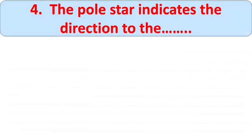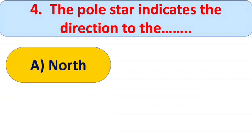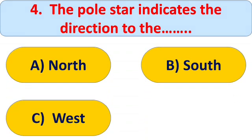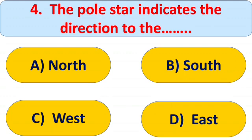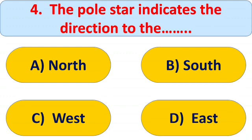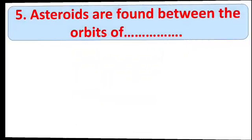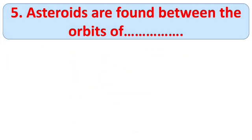Question number four: the Pole Star indicates the direction to the blank. Options: A) North, B) South, C) West, and D) East. You have to tell which direction the Pole Star indicates. The right answer is A) North.